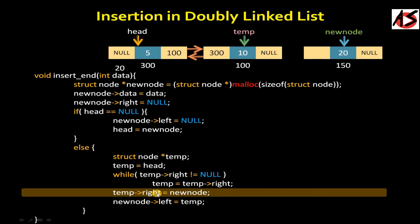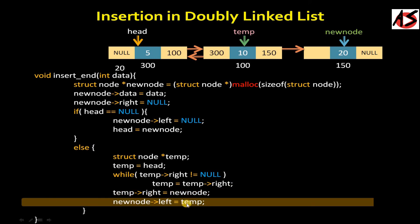We proceed to the next instructions: temp right equals new node. Temp right was null, now we point it to the new node at address 150. Then new node left equals temp — the new node's left pointer, previously empty, is now set to address 100. And this is all about insertion in a doubly linked list.